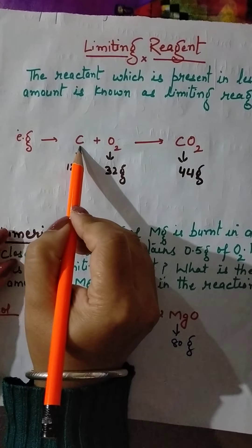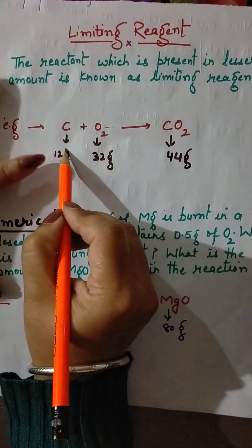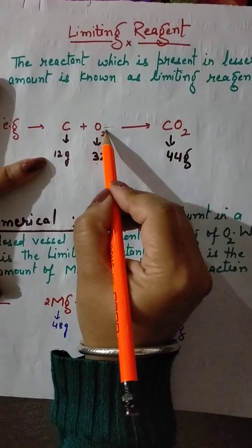The first thing you have to do is write the reaction in the form of a balanced equation. So this is: C + O2 → CO2. Now from the balanced equation, the information is: 1 mole of carbon and 1 mole of oxygen giving 1 mole of carbon dioxide. 1 mole of carbon is 12 grams, 1 mole of oxygen gas O2 is 32 grams, and CO2 is 44 grams.